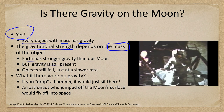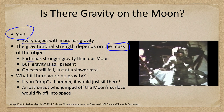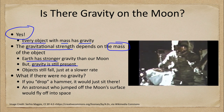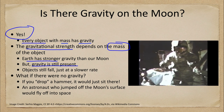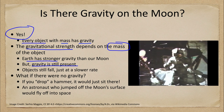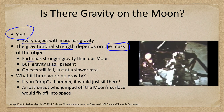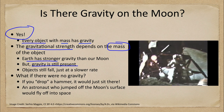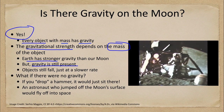Well, in my left hand I have a feather, and in my right hand, a hammer. And I guess one of the reasons we got here today was because of a gentleman named Galileo a long time ago, who made a rather significant discovery about falling objects in gravity fields. And we thought where would be a better place to confirm his findings than on the Moon. And so we thought we'd try it here for you. The feather happens to be appropriately a falcon feather for our falcon. And I'll drop the two of them here and hopefully they'll hit the ground at the same time.